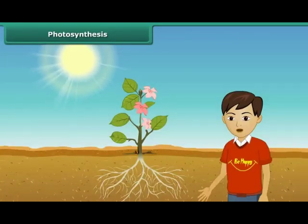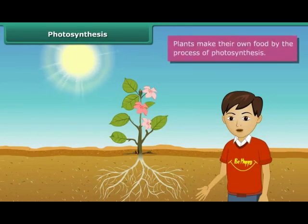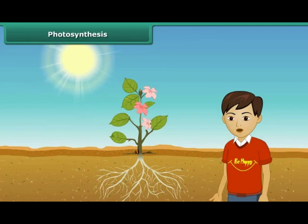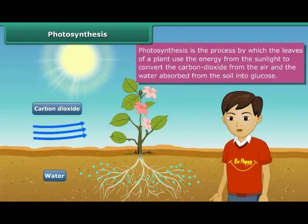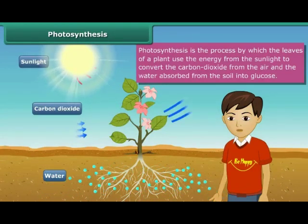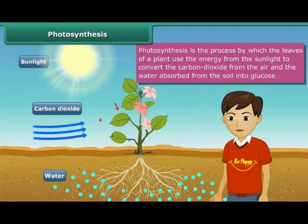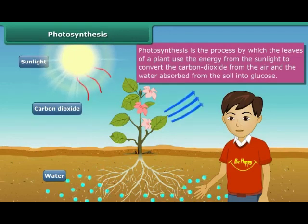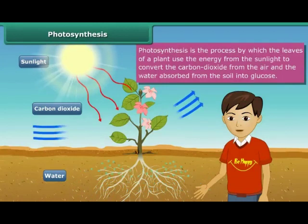Like animals and human beings, plants also require food for their survival. However, unlike animals and human beings, they can make their own food by the process of photosynthesis. This process takes place in the leaves of the plant. In this process, the leaves use energy from the sunlight to convert the carbon dioxide absorbed from the air and the water absorbed from the soil into glucose. The food prepared by leaves is then transported to the different parts of the plant.